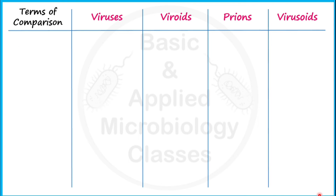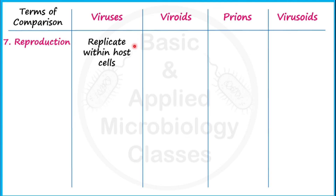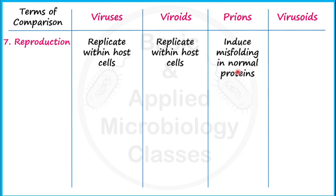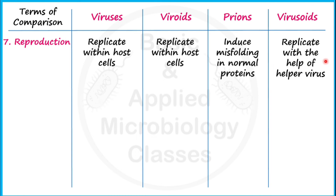Regarding reproduction: viruses replicate within host cells, and viroids also replicate within host cells. Prions induce misfolding in normal proteins, converting them into abnormal proteins. Virusoids replicate only with the help of a helper virus. Overall, all these biological agents are obligate intracellular parasites, requiring the presence of a specific host cell in order to replicate.